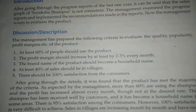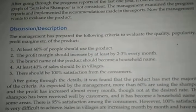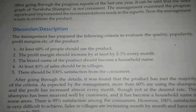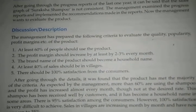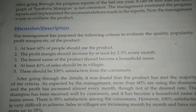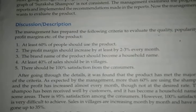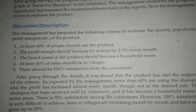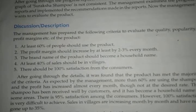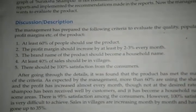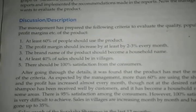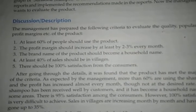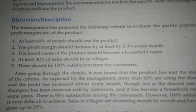The profit margin should increase by at least 2–3% every month. The brand name — Surakshar Shampoo — should become a household name, meaning almost everyone in the home should use the same shampoo and identify with it. At least 40% of sales should be in villages, while 60% is expected in cities. At least 100% satisfaction should be expected from consumers.